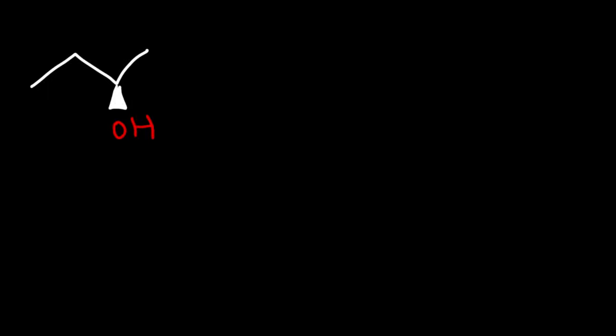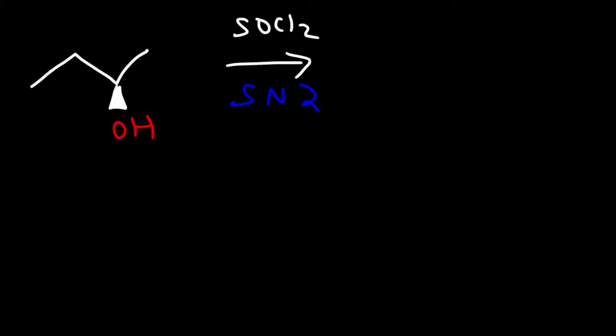If we use SOCl₂ (thionyl chloride), something similar happens — it also goes through an SN2 reaction, so we get inversion at the chiral center, but we get a chlorine atom instead of a bromine atom. You need to be familiar with the stereochemistry of these reactions.